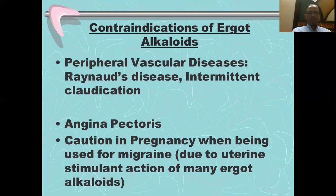Last of all, the last learning objective: the contraindications of ergot alkaloids. They are contraindicated in vascular diseases because of their severe vasoconstrictive complex. They are also not to be given in ischemia due to vasoconstriction. And caution should be exercised in pregnancy, especially when being used for migraine.